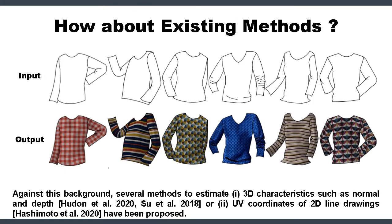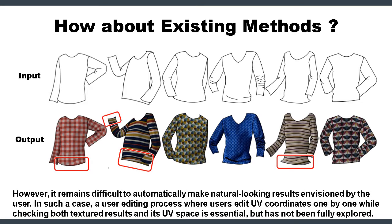Against this background, several methods to estimate 3D characteristics such as normal and depth field or UV coordinates from 2D line drawings have been proposed. However, it remains difficult to fully automatically make natural-looking results envisioned by users. In such a case, a user editing process where users edit UV coordinates one by one while checking both textured results and UV space is needed.